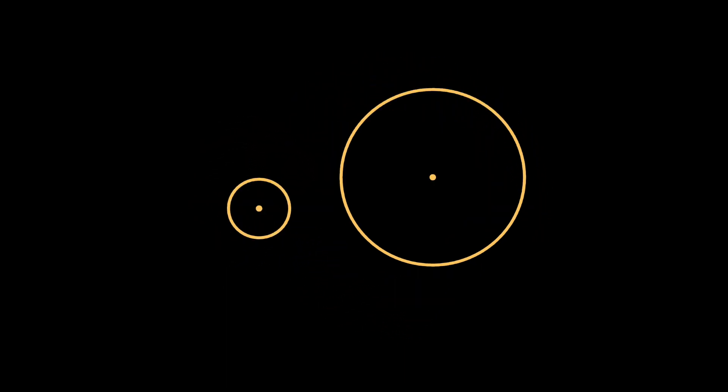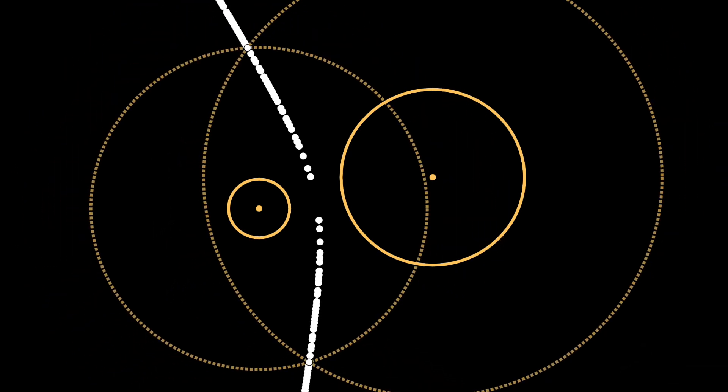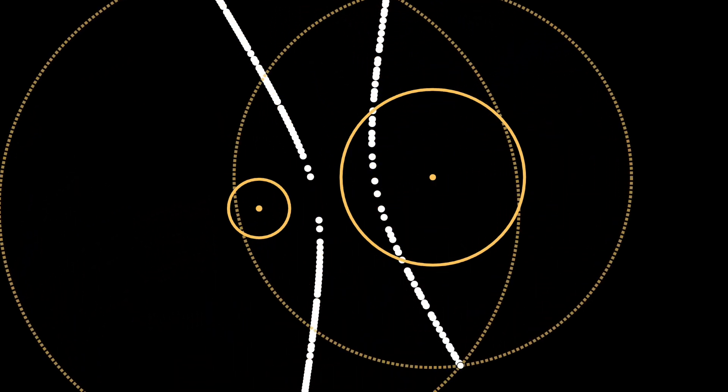Instead of just looking at a few representative points of collision, let's look at all of them. We do this for all four combinations of growing and shrinking the two circles and we see a beautiful pattern emerge.